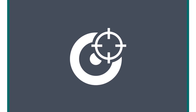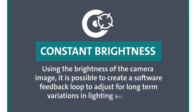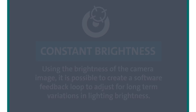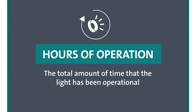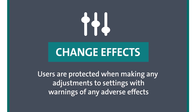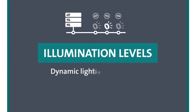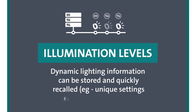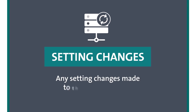Using the brightness of the camera image, it is possible to create a software feedback loop to adjust for long-term variations in lighting brightness. The total amount of time that the light has been operational is logged. Users are protected when making any adjustments to light settings with warnings of any adverse effects. Dynamic lighting information can be stored and quickly recalled — for example, unique settings for different products. Any setting changes made to the light are also logged.